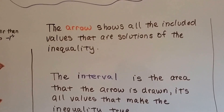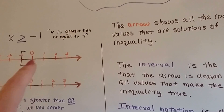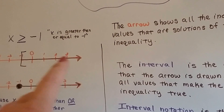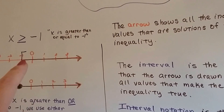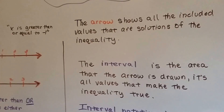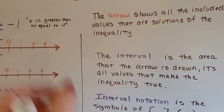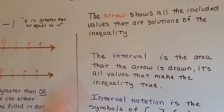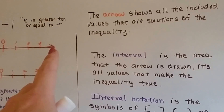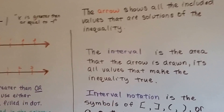An arrow shows all the included values of the solutions of the inequality. This arrow is drawn everywhere there's a solution — everything that's bigger than negative 1, the arrow is drawn on it, however big the number line is. The interval is the area that is drawn on — that's the interval. Because 4 or 5 isn't drawn here, but that would be on the number line and would be part of the solution. Interval notation.